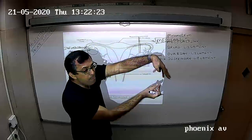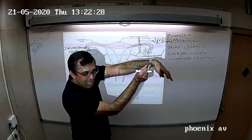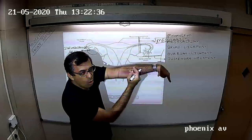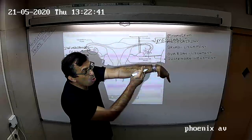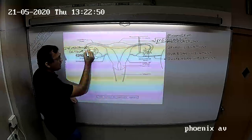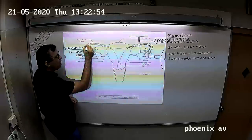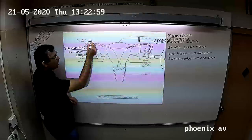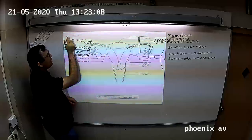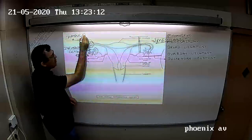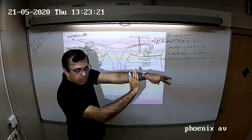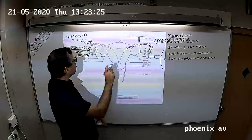The fimbriae move and suck the egg into the fallopian tube, and then cilia by their forward and backward lashing movements move the egg towards the uterus. Just behind the infundibulum, which is the big funnel-shaped region, is found a dilated portion. That dilated portion of the fallopian tube is called as the ampulla.